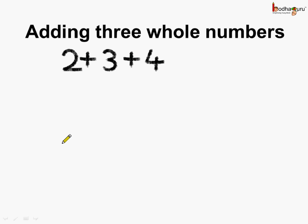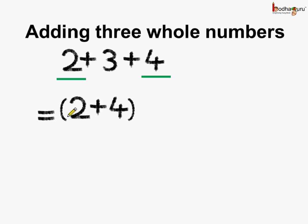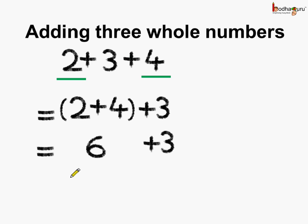Let us try another way to add these three numbers. Here we will add two and four first. So, this is equal to two plus four in brackets, indicating we need to add them first, plus three. If we add two plus four we get six, and we need to add three. Six plus three is equal to nine.